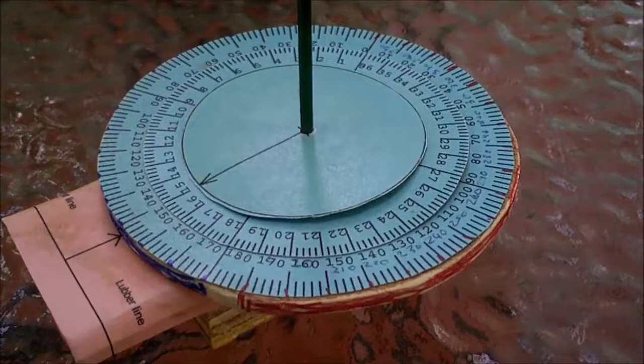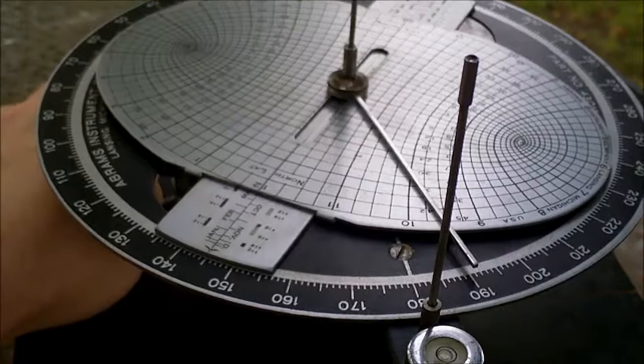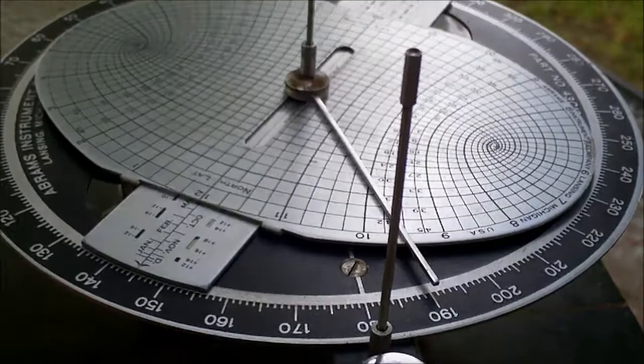Now with the Abrams you can't do that. If you're going around an obstruction the shadow doesn't fall on any useful information I don't believe. This however does have an advantage over the Bagnold Compass.